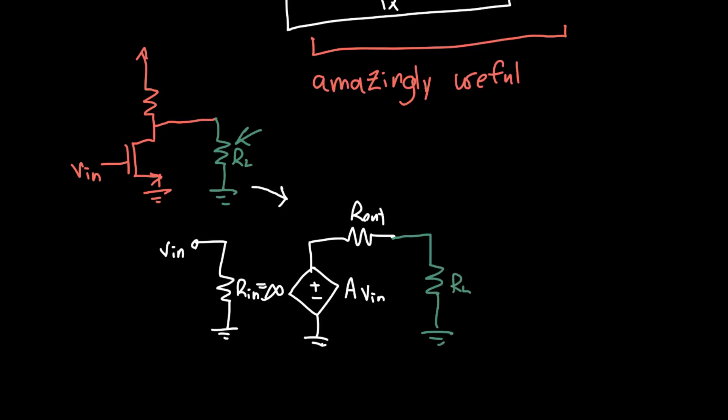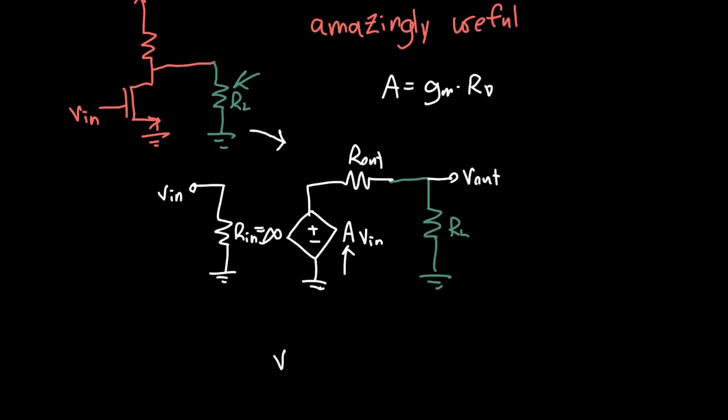Rather than redoing all of our analysis, we can just redraw this circuit as our two-port circuit model. We've got some input resistance R_in which for a MOSFET we know is just infinity, some voltage V_in, some gain A times V_in, our output resistance R_out, and now this additional resistance - let's call this R_L.